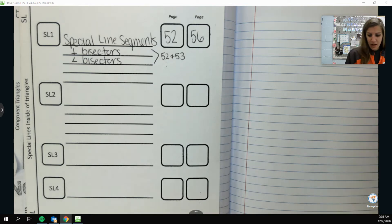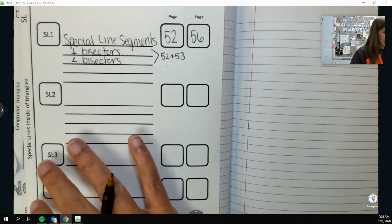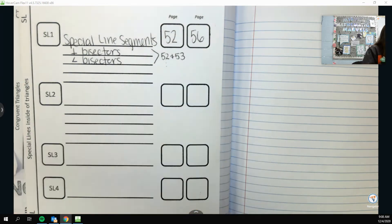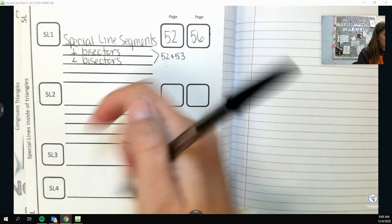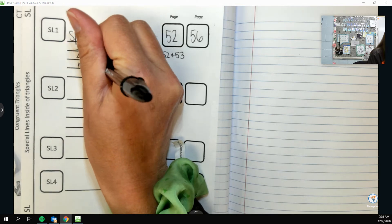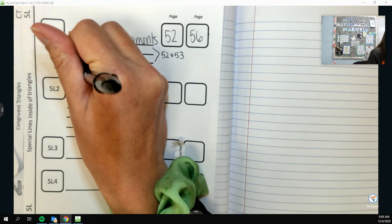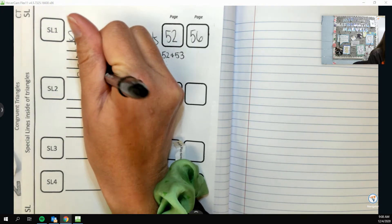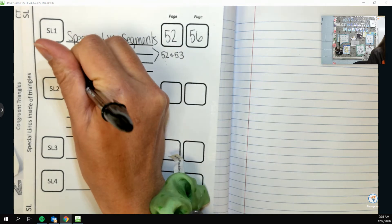Alright guys, we're going to talk about our other special line segments. The ones we're going to talk about today—I forgot to fix this—there's actually three and I only have two more little lines, so we're going to squeeze it in. We need to talk about a median, an altitude, and a mid segment.